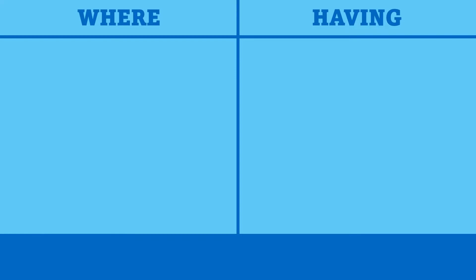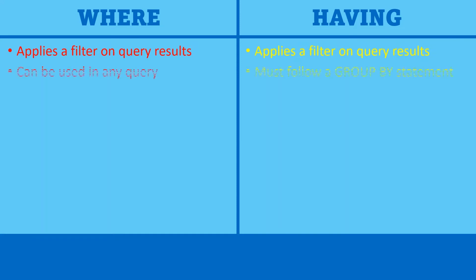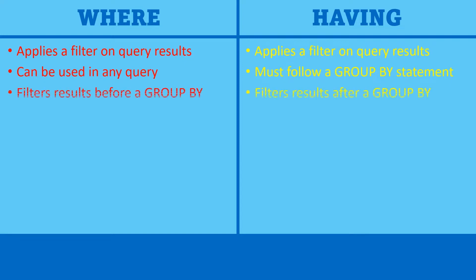In both the WHERE and HAVING clauses, you are applying a filter on your query results. But the WHERE clause can be used in any query, while the HAVING clause must follow a GROUP BY statement. The WHERE clause filters results before a GROUP BY, while the HAVING clause filters results after a GROUP BY — so you cannot have a HAVING clause without a GROUP BY first.